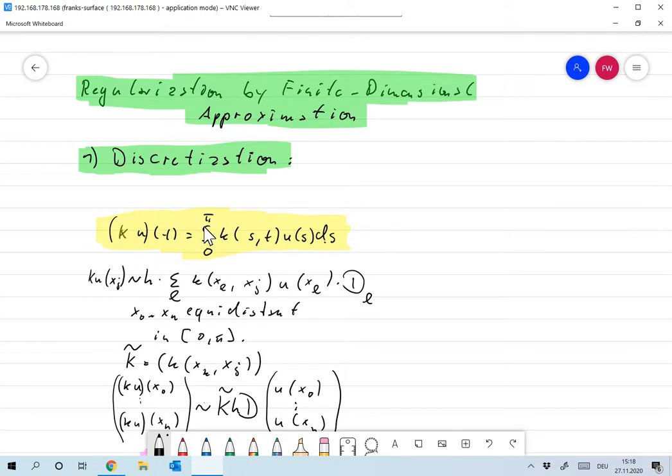One thing we might do is discretize the whole thing. We would not evaluate at all t in [0,π] and also we would not use s everywhere in the range of 0 to π. Let's discretize the interval by introducing x_0 to x_n which are equidistant in [0,π]. Then we can approximate K u at x_j by h times the sum over all l of the evaluations of u at the points x_l with K(x_l, x_j).